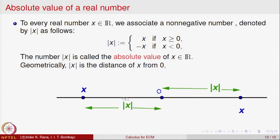Geometrically, if 0 is a point and x is another point, we want to measure the distance from 0 to x. That distance is |x|, because distance is always measured as a positive quantity. If x is on the positive side, |x| is x itself. If x is negative, the distance is minus of x. So algebraically, |x| = x if x > 0 and |x| = -x if x < 0. This is the absolute value of a real number, and geometrically it signifies the distance between 0 and x.